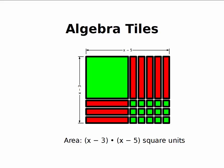So we could write this as x minus 3 times x minus 5. Or if we look at the pieces, I've got an x squared, I've got 8 negative x's, and 15 positive ones. So I could also write that as x squared minus 8x plus 15.